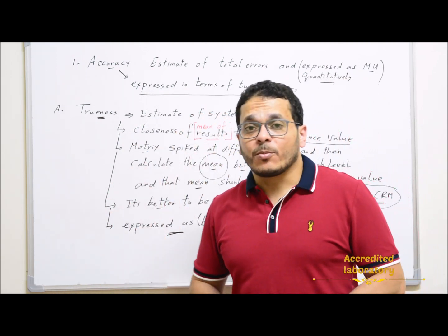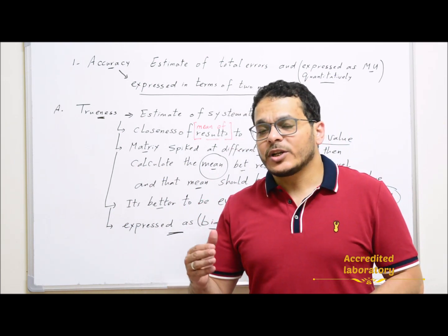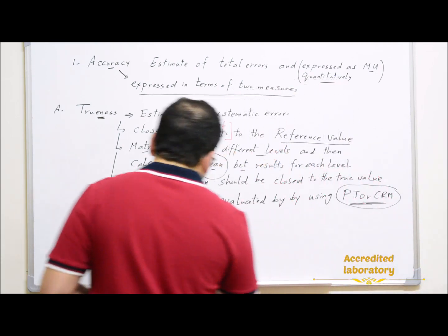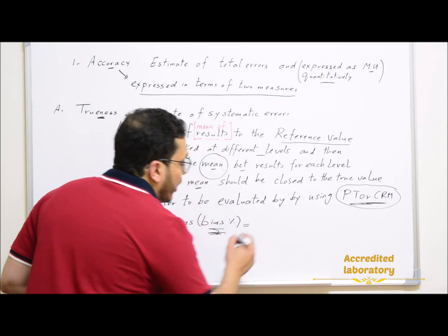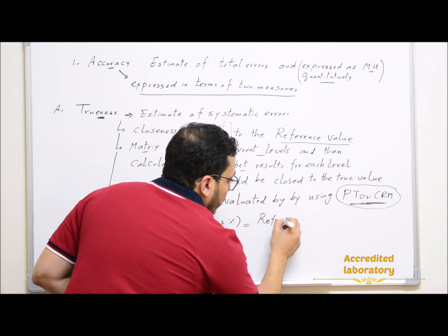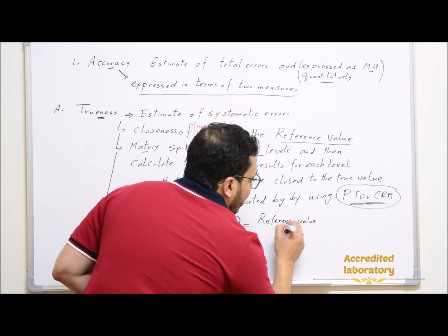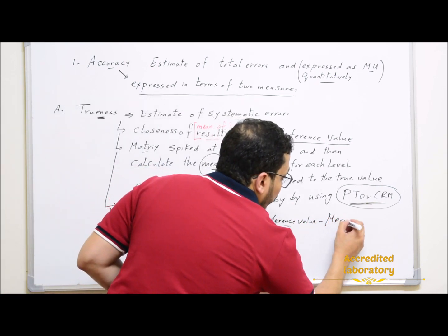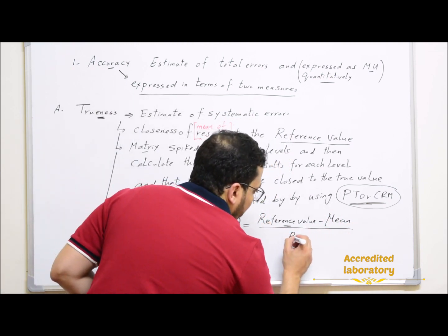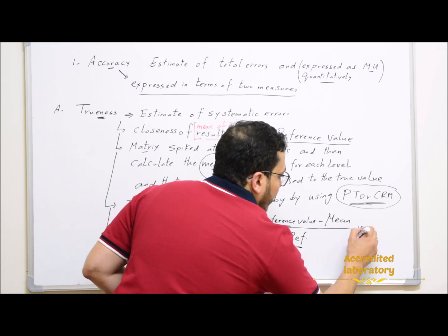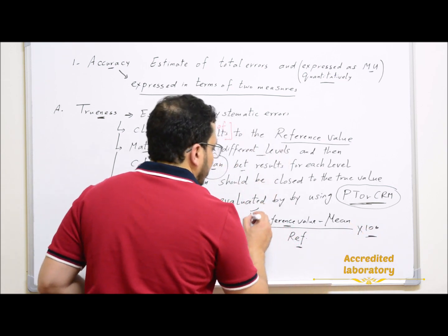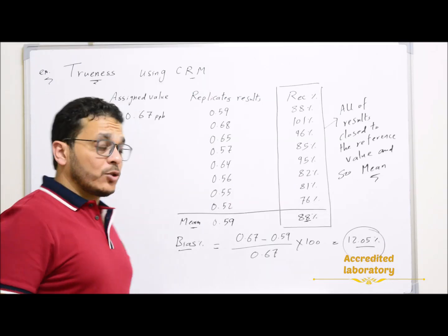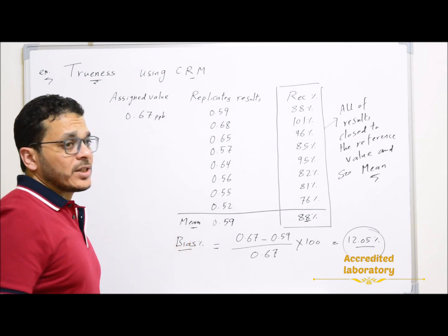To evaluate trueness, you make 6 to 10 replicates from your CRM, calculate the mean of all replicates, and then calculate the bias. Trueness is expressed as bias percentage, which equals: (reference value − mean of replicates) ÷ reference value × 100. Here is an example of how to evaluate trueness and calculate bias using certified reference material.